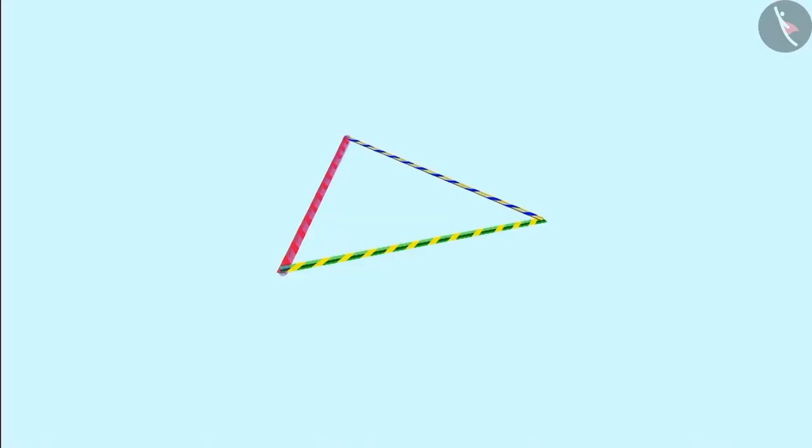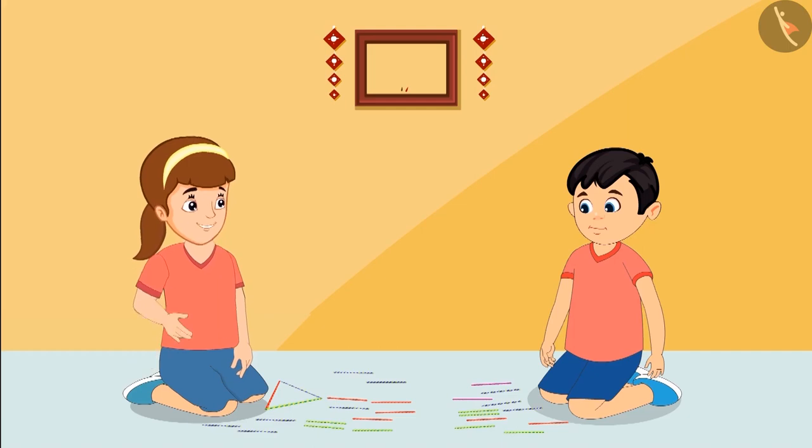Neha, this shape is made of three straws. It means it is a triangle. Is it so? Yes Chotu, you are right.